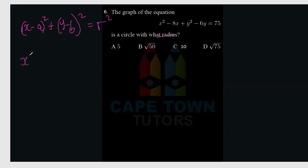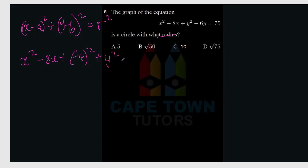To complete the square, we take x squared minus 8x, then we add a term. We take the coefficient negative 8, multiply by one half to get negative 4, and then square it. So we add negative 4 squared.